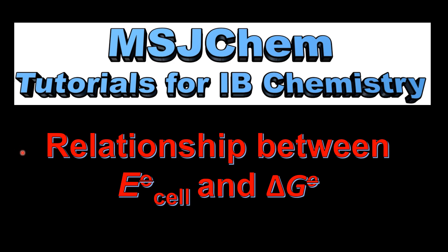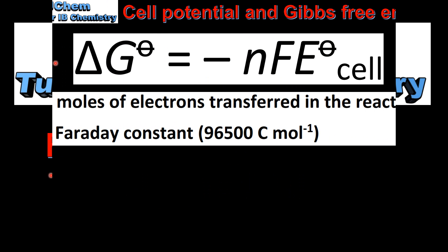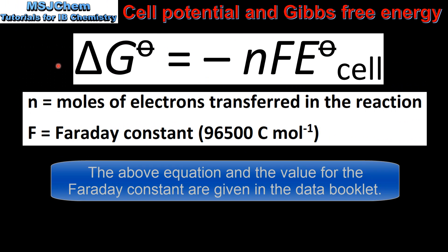This is MSJChem. In this video I'll be looking at the relationship between the cell potential and Gibbs free energy. The change in Gibbs free energy is related to the cell potential in this equation, where N is the moles of electrons transferred in the reaction and F is the Faraday constant.